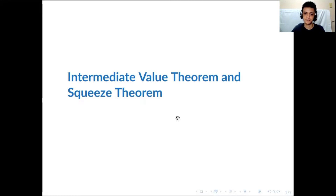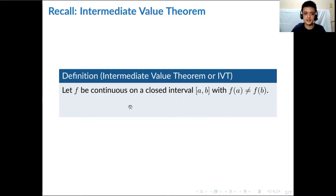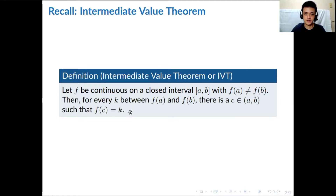Let's start by recalling some definitions. Let's start with IVT. What IVT says: we let f be a continuous function on a closed interval [a, b] with f(a) not equal to f(b). If that is satisfied, then for every k between f(a) and f(b), there exists a c in the open interval (a, b) such that f(c) equals k.